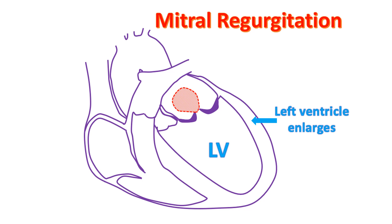The volume overloaded left ventricle enlarges and its muscle becomes thickened gradually to cope with the increased workload.